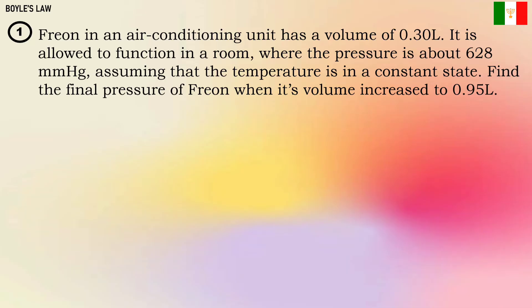The first thing we'll do is find the given. Since our topic is about Boyle's Law, we all know that we need to find the pressure and volume values in the problem. Make sure you know the units to easily identify if it's pressure or volume. P₁ is 628 mmHg. P₂ is unknown because based on the problem, we need to find the final pressure. V₁ is equal to 0.30 liter, and V₂ is 0.95 liter.